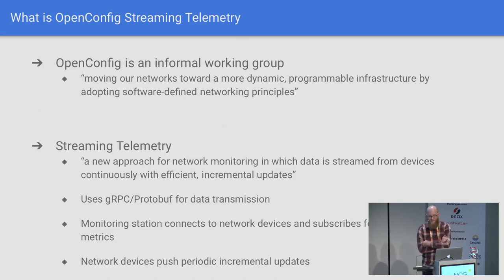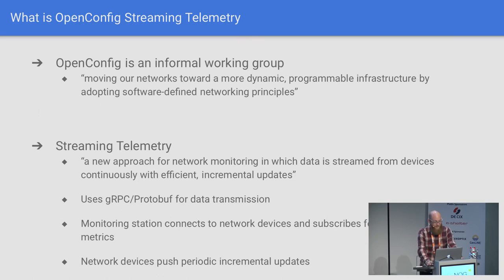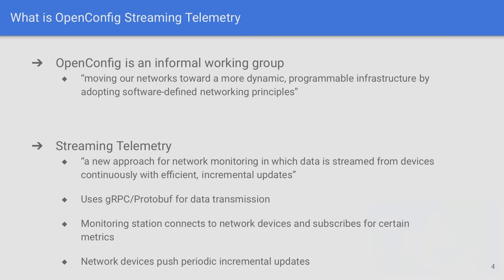So what is OpenConfig streaming telemetry? OpenConfig is an informal working group that is working on moving our networks toward a more dynamic, programmable infrastructure by adopting software-defined networking principles. They also do monitoring stuff, namely the streaming telemetry project. Streaming telemetry is a new approach for network monitoring in which data is streamed from devices continuously with efficient incremental updates.